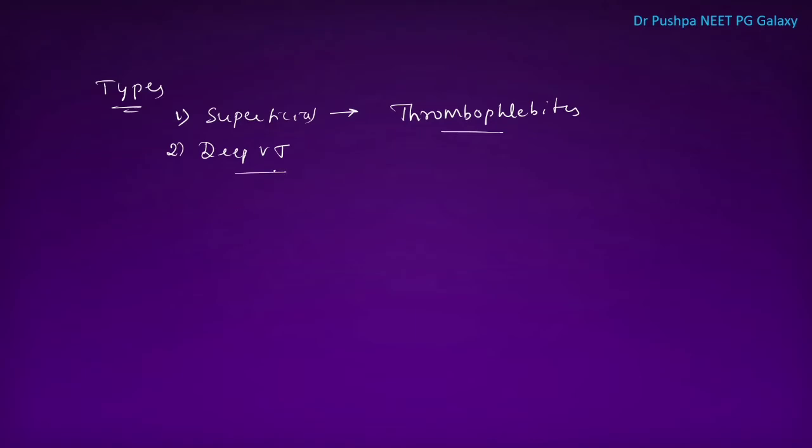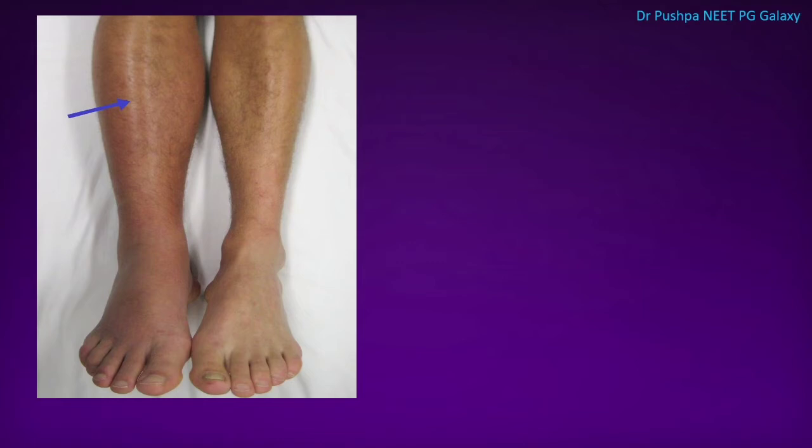Next one is deep venous thrombosis. It is also called as phlebothrombosis. In this session we will study in detail about deep venous thrombosis. In this picture we can see the case of DVT, that is, we can see swelling of the lower limb.